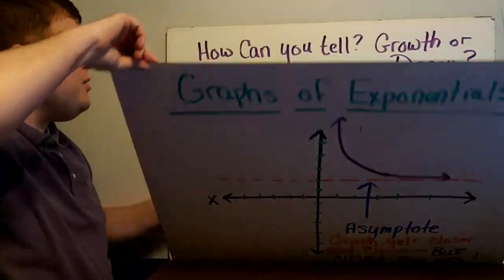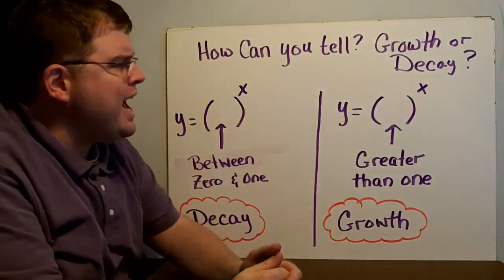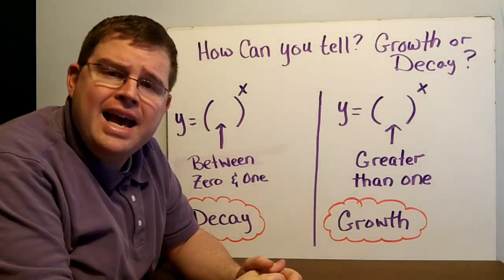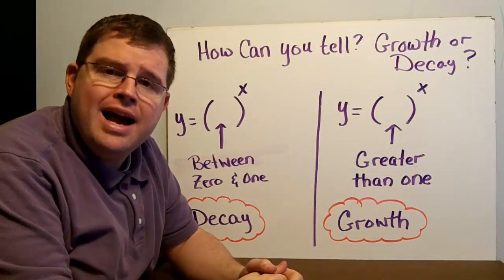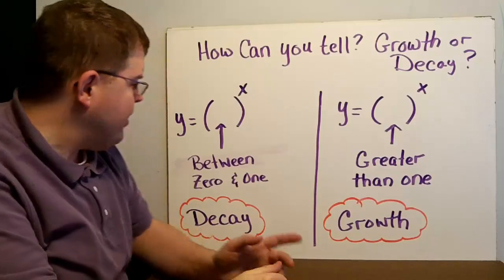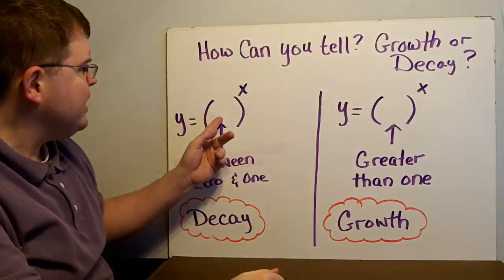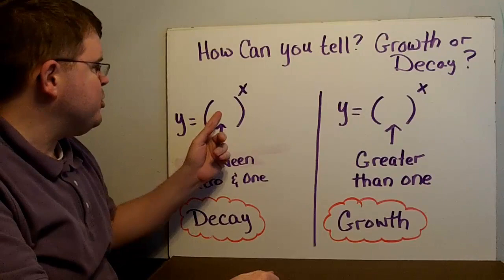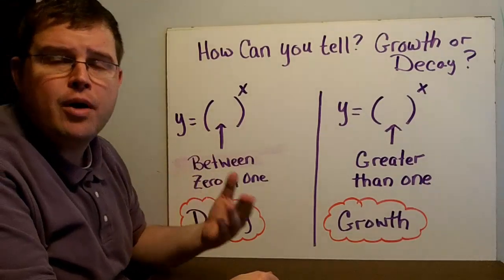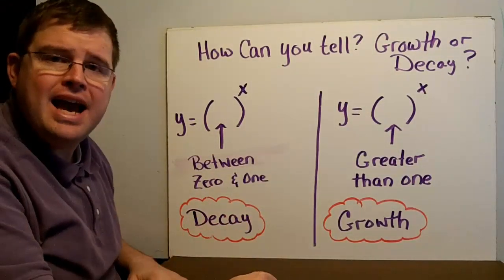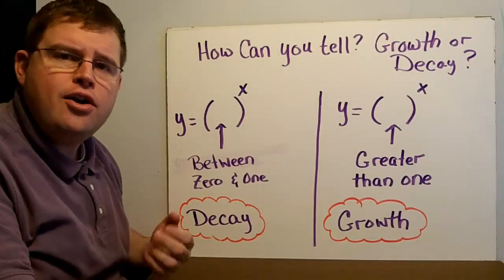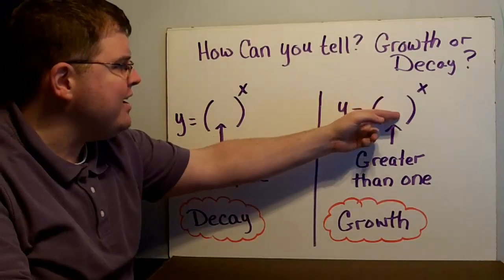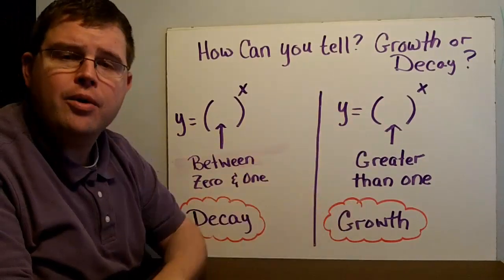So how can we tell by looking at our function if it's growth or decay? There's a simple rule: take a look at the number that has the exponent. If the number is between 0 and 1 — say 1-half — it's going to be decay. If the number is larger than 1 — say 2, 5, anything like that — then it's going to be growth.